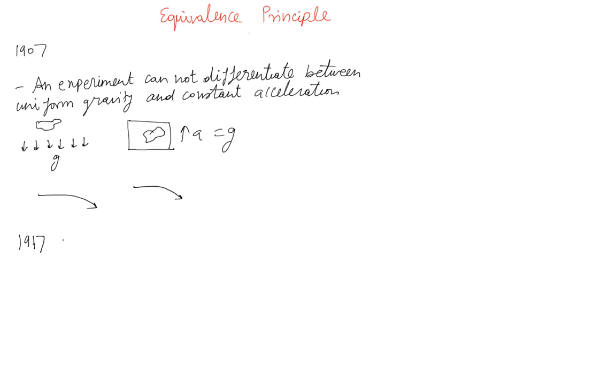What really spoils equivalence principle is a non-uniform gravitational field. For example, let's say Earth. The Earth's gravitational field is not uniform in height either. And these are called tidal forces.